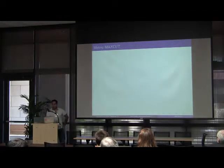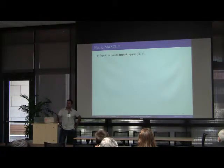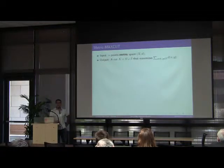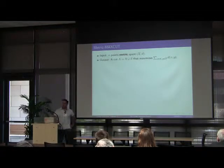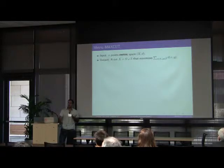Our next result is about metric maxcat. Here again the input is an n-point metric space, xd. And the output is a cut, a partition of x into two sets, s and its complement that maximizes the sum of distances between pairs of points that are classified into opposite sides of the cut.